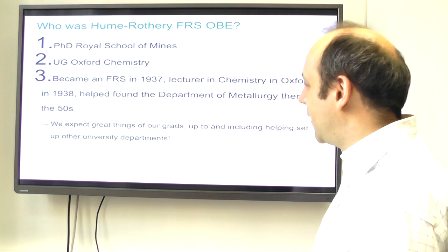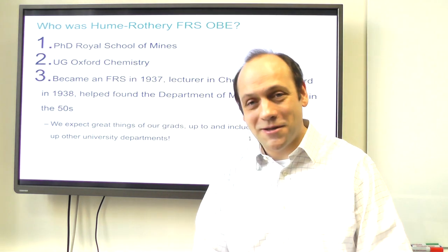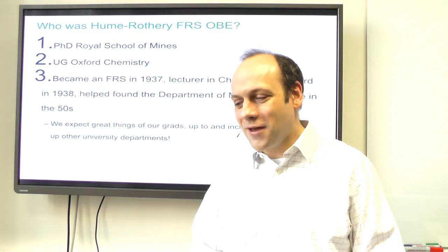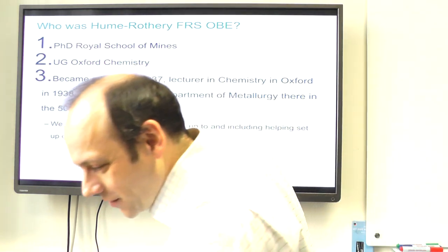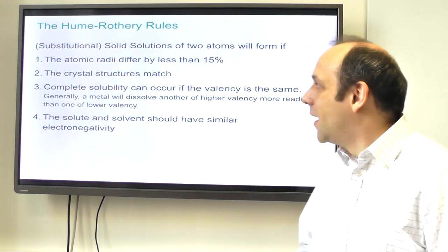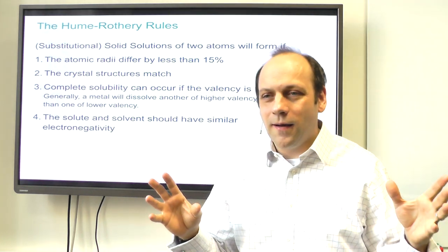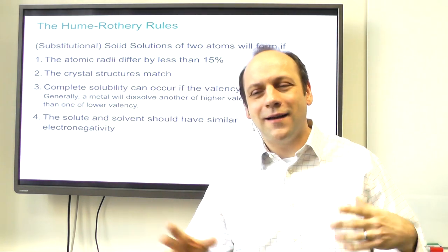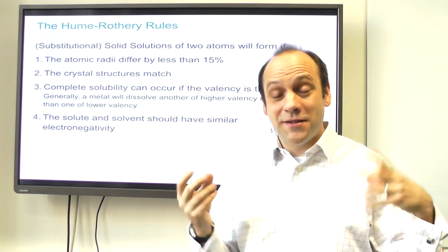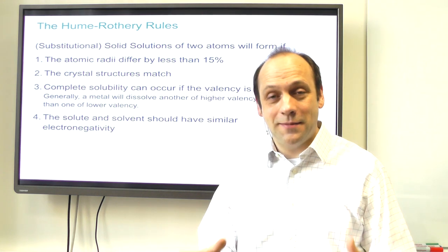Hume-Rothery was part of the invention of modern material science, which was really a post-war thing that came out of physics, chemistry, and metallurgy together. That revolutionized metallurgy and gave us modern material science and engineering departments. And Hume-Rothery came up with a set of empirical rules called the Hume-Rothery rules, based on physical concepts and observations of how alloying seemed to work.